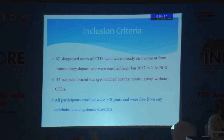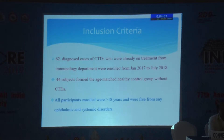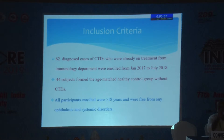We took 62 diagnosed cases of connective tissue disorder who were already on treatment from the immunology department, enrolled from January 2017 to July 2018. 44 subjects formed the age-matched healthy control group without connective tissue disorder. All participants enrolled were more than 18 years and were free from any ophthalmic and systemic diseases.